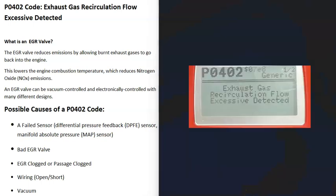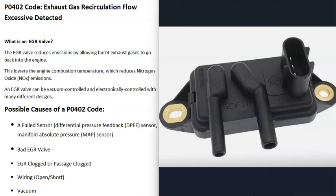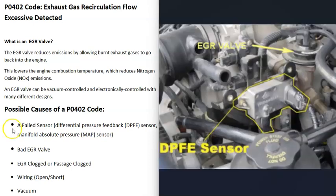What are some possible causes of a P0402 code? The first thing that could cause this is a bad sensor. The sensor that reports back to the computer what the pressure is and what the EGR valve is doing has gone bad, reporting incorrect information. Depending on the vehicle, this could be a differential pressure sensor or a bad manifold absolute pressure (MAP) sensor.